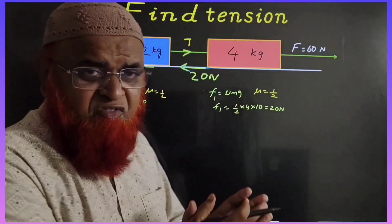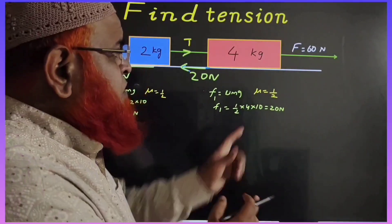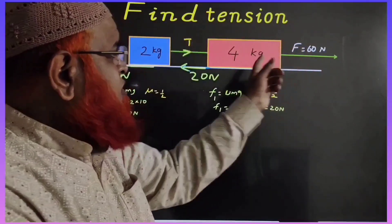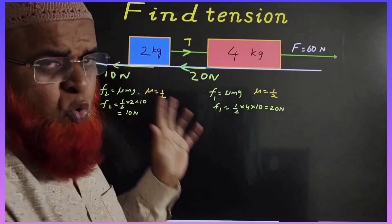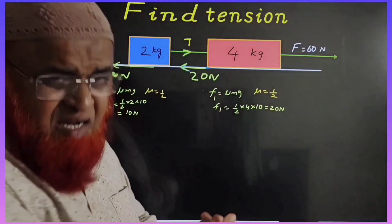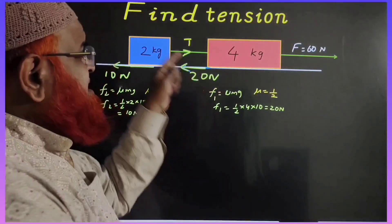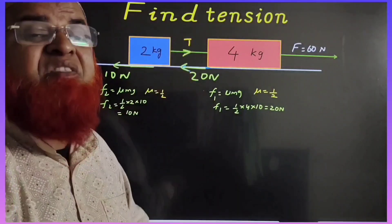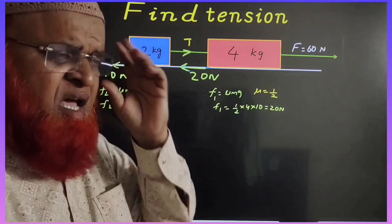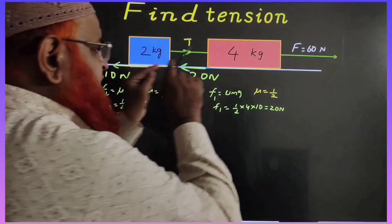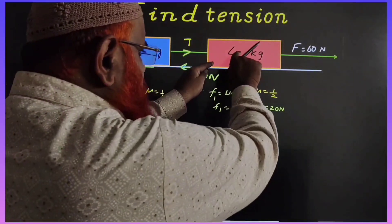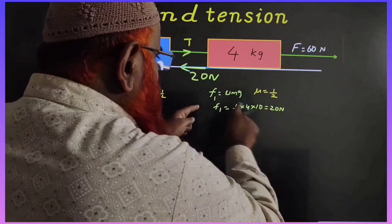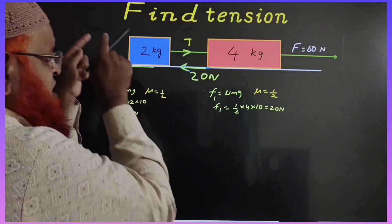Hey friends, this is a case of friction. When 60N is acting on 4kg and 2kg and both are moving with certain acceleration, it is asking us to find out what is the tension between the two blocks. A simple method is: first of all, find out the friction on this block, μMG, which is nothing but 20N.